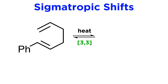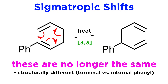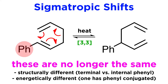We can begin to see a discrepancy in the two structures by adding substituents. For example, let's put a phenyl group on this terminal carbon. If the shift were to occur, the phenyl group would be on an internal carbon, so these structures are no longer the same. They are also not of the same energy, because we can see that in the first structure one of the pi bonds is conjugated with the phenyl group, whereas in the other it is not. So this is where we can begin to see the equilibrium shift more towards one structure over the other.